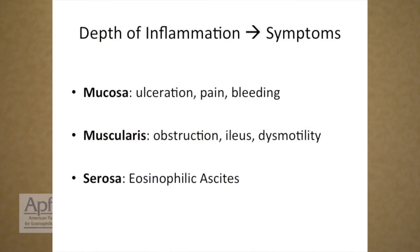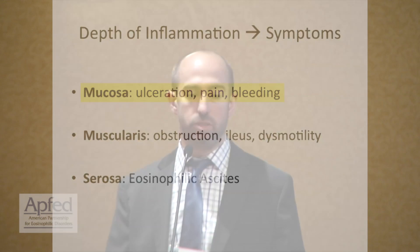The depth of inflammation will change the symptoms. If the mucosa — the surface of the small bowel or colon — is affected, that's where you get ulceration, that's where you get pain, that's where you get bleeding, diarrhea, and malabsorption. That's often the easiest to see.